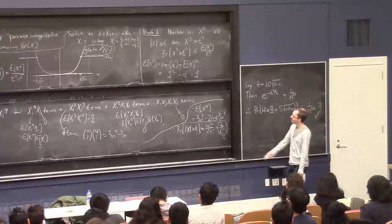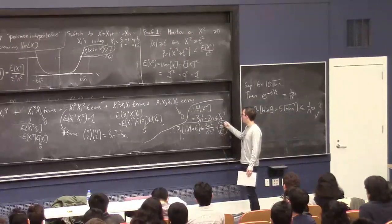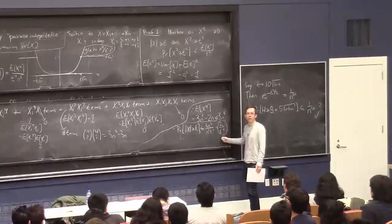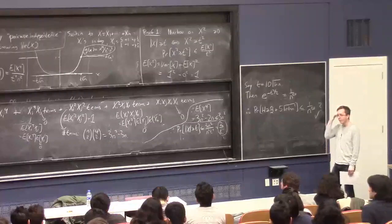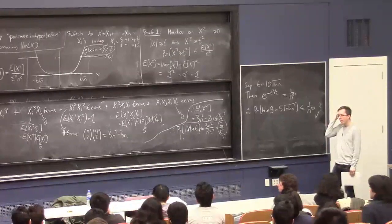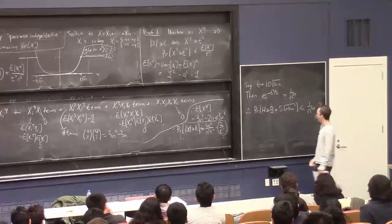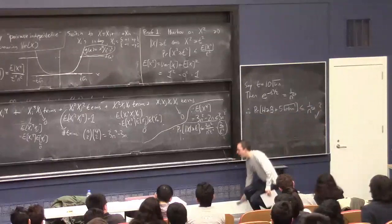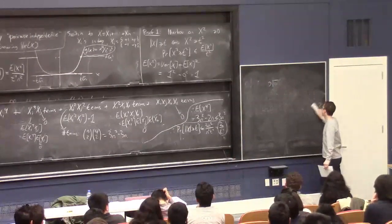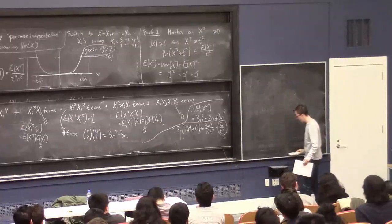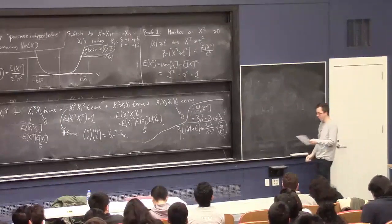If we use t equals 10 root ln n, we get a constant over log squared n for our bound, which is better than constant over log n from Chebyshev. And if you do it with higher moments, you'll get even better bounds, though the computations become more annoying unless done in a slick way. We always use even powers because an odd degree polynomial can't be kept above the step function everywhere.